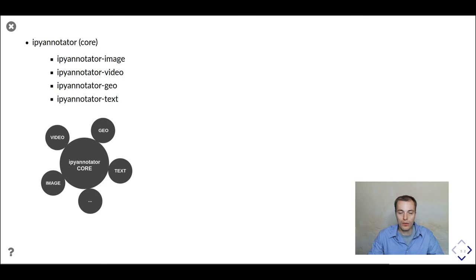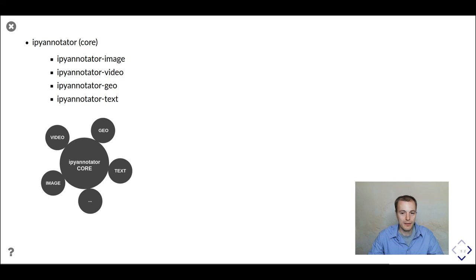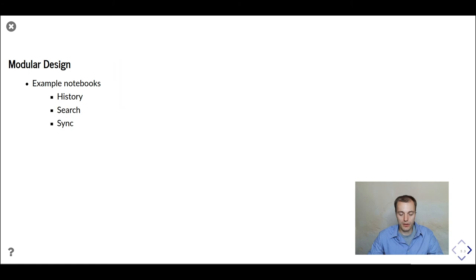One of the key design principles of IPA Annotator is to separate the core, which contains generic building blocks that you can use independently in different domain-specific annotation notebooks. The code needed to handle domain-specific data aspects and domain-specific UI are less interchangeable and are therefore kept in separate modules. Let's now look at some examples for the generic parts in IPA Annotator core: the history, search, and async functions — requirements shared across domain-specific annotation tasks.